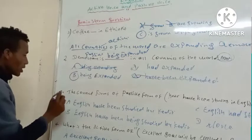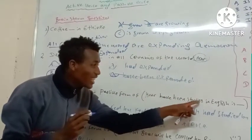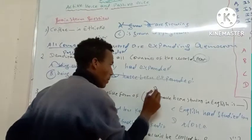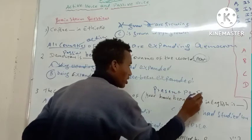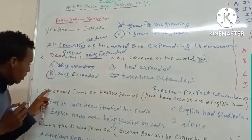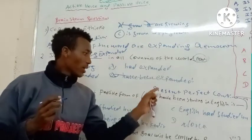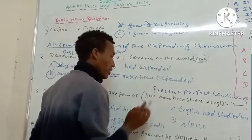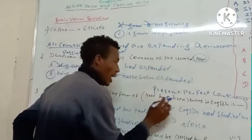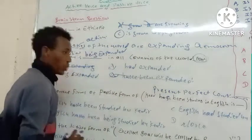Third question: 'Kadir has been studying English.' What type of tense is this? This is Present Perfect Continuous Tense. What is the correct passive form of 'Kadir has been studying English' when converted into passive?